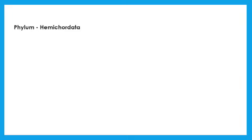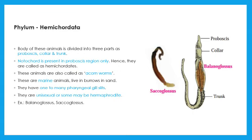The next phylum is Hemichordata, meaning half-chordate. They are also known as acorn worms. They have a notochord in the proboscis region — proboscis means a sucking organ. These are multicellular, triploblastic animals divided into three parts: proboscis, collar, and trunk. They are marine animals that live in burrows in the sand. They have pharyngeal gill slits for respiration and are unisexual or hermaphrodite. Examples include Balanoglossus and Saccoglossus.